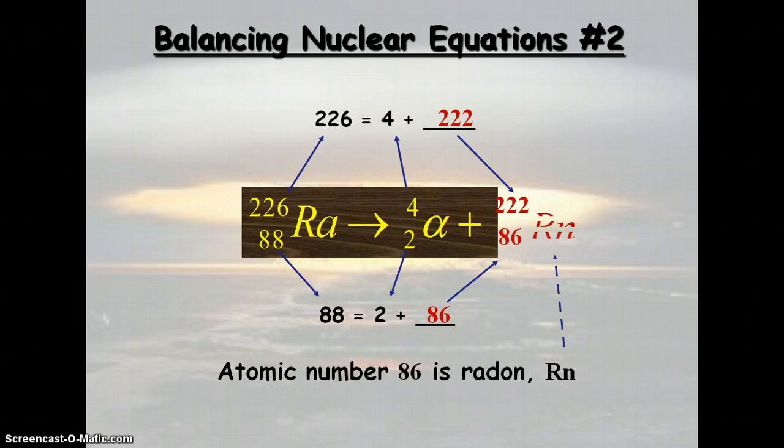And 86 is atomic number for radon. So radon's our answer. So it goes in right there. So radium 226 emits an alpha particle and becomes radon 222.